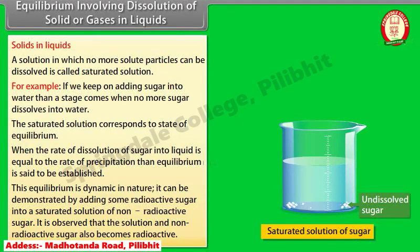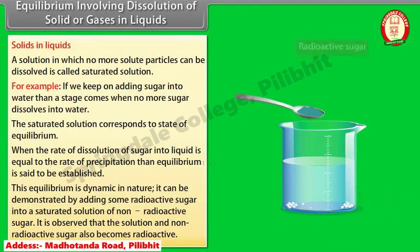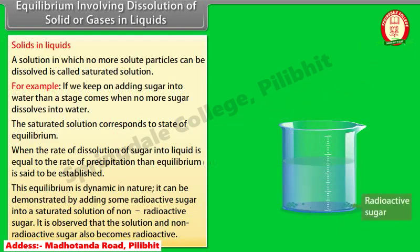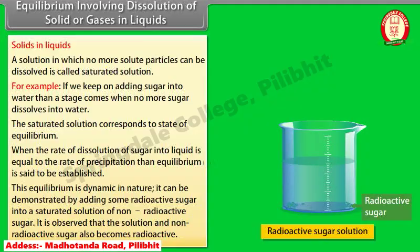The dynamic nature of this equilibrium can be demonstrated by adding some radioactive sugar into a saturated solution of non-radioactive sugar. It is observed that the solution and the non-radioactive sugar also become radioactive.